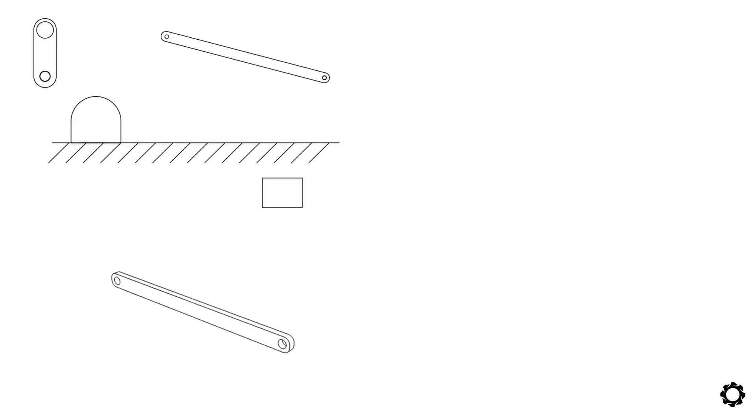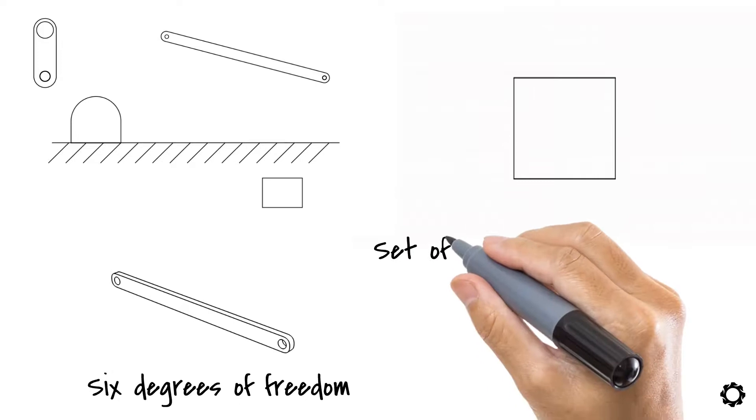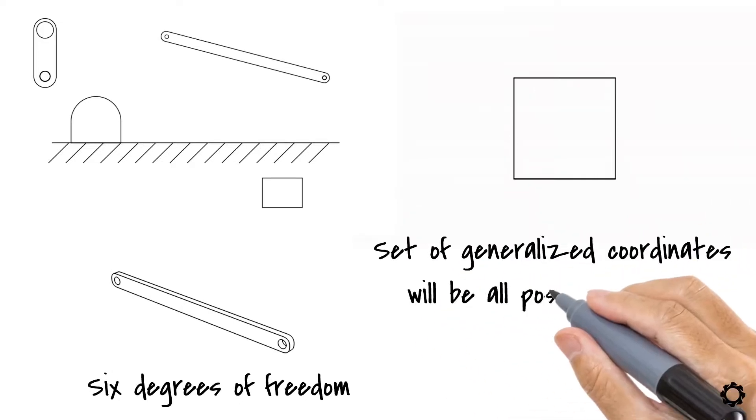In space, each one of the bodies will have six degrees of freedom. As the problems in our course are mainly planar, each one of them will then have three degrees of freedom, two translations and one rotation. Your set of generalized coordinates will be all the possible motions.